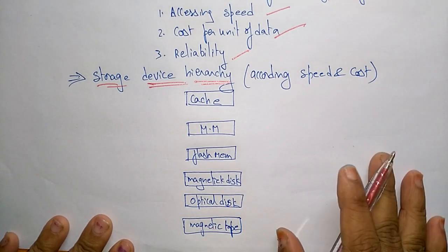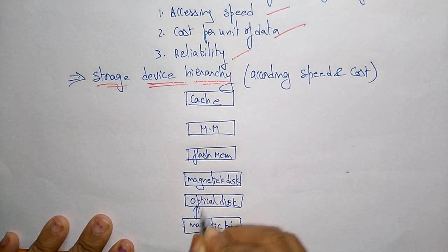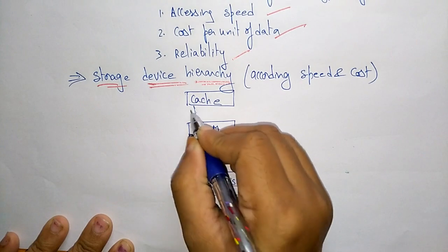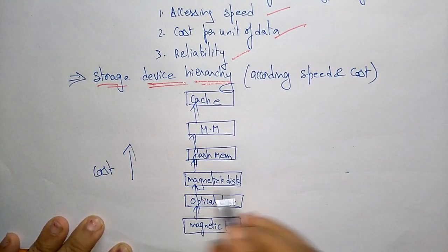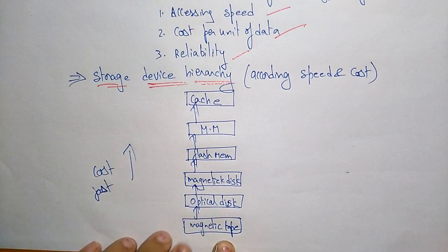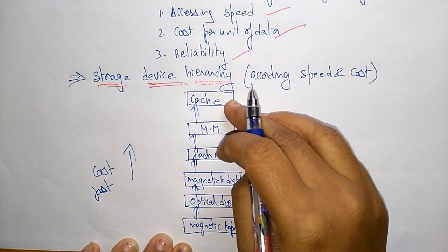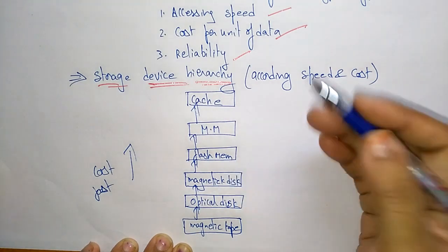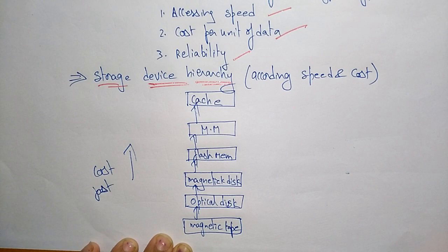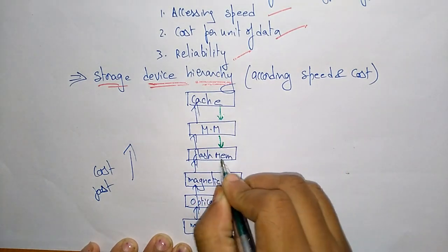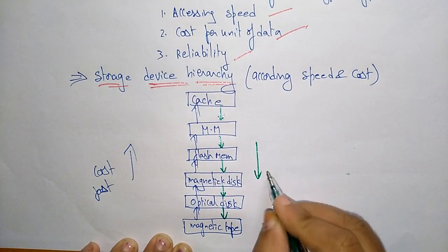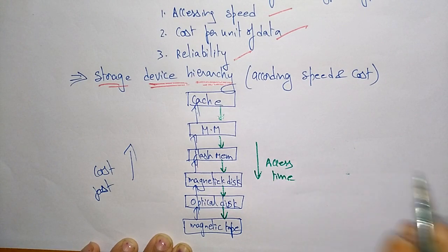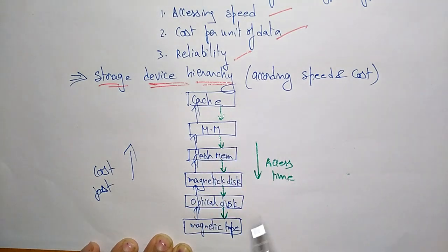In this hierarchy, cost increases from magnetic tape up to cache memory, and the speed of storage devices also increases going up. Compared to magnetic tape, cache is the fastest storage device. Cache is present in your CPU, main memory is your RAM device, and flash memory and magnetic disk are secondary and tertiary memory devices. Cost increases going up, while access time decreases — so you can access data fastest in cache, whereas in magnetic tape the access time is very high.